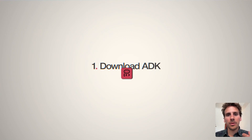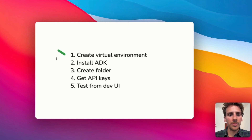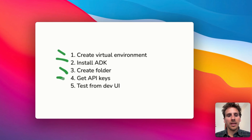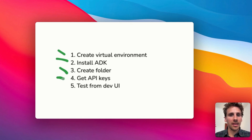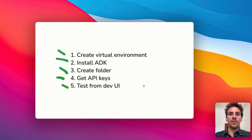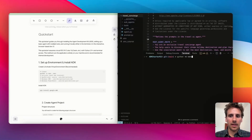Welcome to step one, where we're going to ensure everything is set up correctly on our computer. We need to create a virtual environment to install Google ADK — the agentic framework — then create a folder to manage all the different files our agents need. Then we'll get the different API keys, specifically the Gemini keys for the LLMs to run and help our agents think and act, and finally we'll test the dev UI — a very fancy feature Google's ADK has developed to test out agents in development.